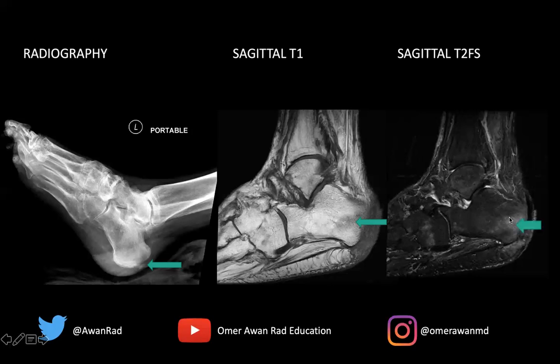On the sagittal T2 fat-sat, we have confluent T2 hyperintense bone marrow edema in the calcaneal tuberosity. All these findings are suggestive of acute osteomyelitis.